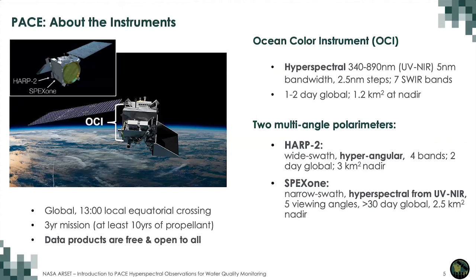PACE is a polar orbiting satellite that provides global observations every one to two days. It is a three-year mission with three instruments aboard. The first is OCI, the Ocean Color Instrument — a hyperspectral scanning radiometer. We also have two small but mighty multi-angle polarimeters. One of them is HARP2, a wide swath hyperspectral polarimeter contributed by the University of Maryland Baltimore County. We also have SPECS1, a narrow swath hyperspectral polarimeter contributed from a consortium of organizations in the Netherlands.